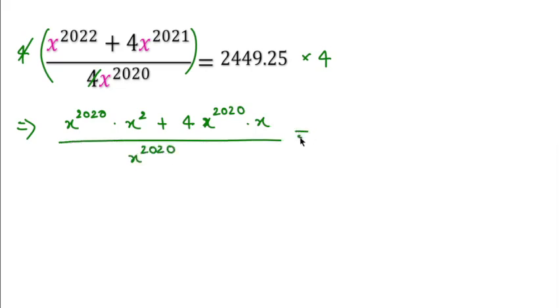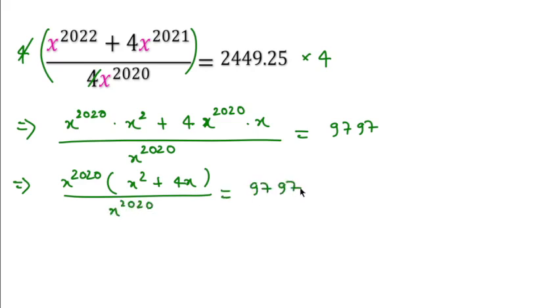We can write x^2020. After multiplication, this becomes 9797. This implies I will take x^2020 common from both terms, then x^2 plus 4x over x^2020 equals 9797, and these terms get cancelled.